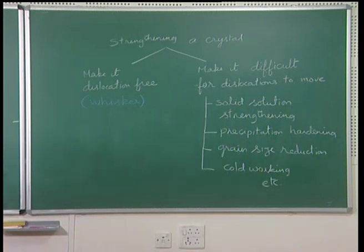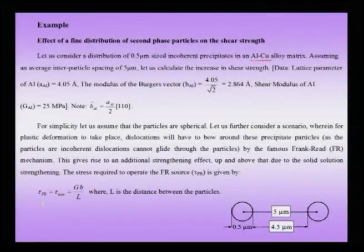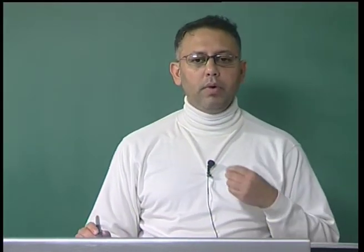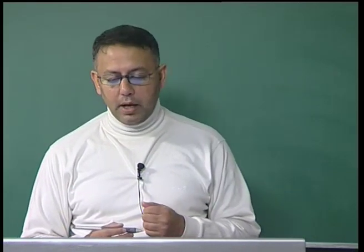We are going to solve the example of precipitating a second phase into the matrix, which gives us strengthening — specifically the aluminium-copper system. We will make certain simplifying assumptions to understand how this distribution of precipitates gives rise to hardening, and we will delve into the mechanism. When we go to nanomaterials, we will see that some of these mechanisms can be effectively used and some will actually cease to exist, which is why it is important to consider this example of hardening in detail.